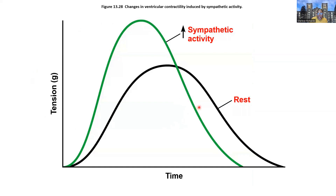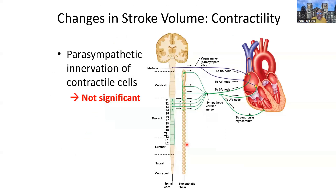Comparing these cells at rest versus with sympathetic engagement: at rest there is less force generation and contractions take longer. With the sympathetic system engaged, more force is generated through these four mechanisms, and contractions occur over a shorter duration. The sympathetic system increases force generation and shortens the rate at which those events occur. Importantly, the parasympathetic system has little to no influence on the contractile cells and is not considered when evaluating stroke volume and contractility.